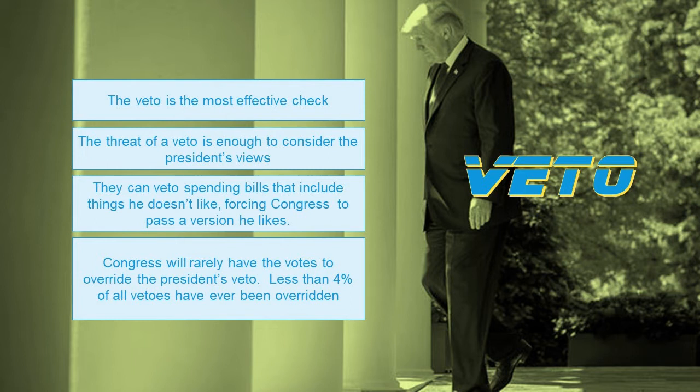Less than 4% of all presidential vetoes have ever been overridden. A veto is most likely to be overridden when Congress is passing a law that limits presidential power — Democrats and Republicans can come together in those cases to override it, since both parties share an interest in maintaining congressional power relative to the president.